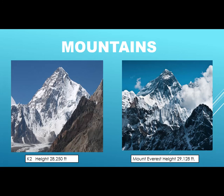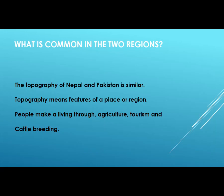Mountains. Here are two pictures of mountains: K2 and Mount Everest. You must have heard about these two big and giant mountains in the world. K2 lies in Pakistan and Mount Everest is in Nepal. Mount Everest is the highest mountain in the world, and K2 is the second highest and Pakistan's first highest peak. The topography of Nepal and Pakistan is similar. Topography means features of a place or region. People make a living through agriculture, tourism, and cattle breeding.